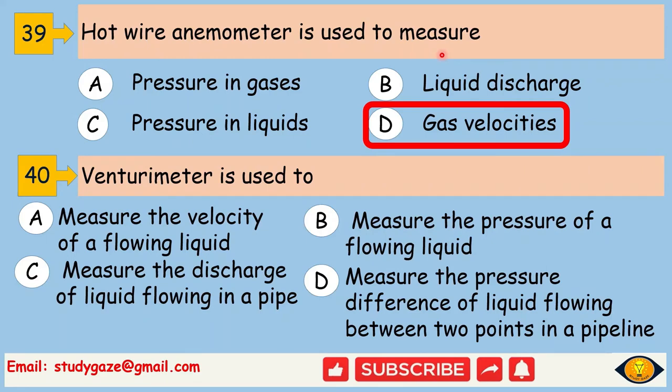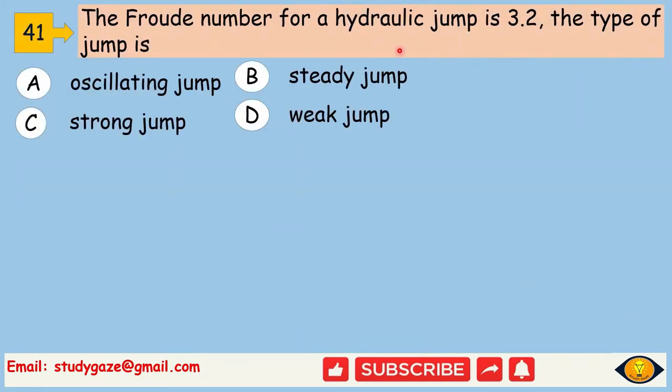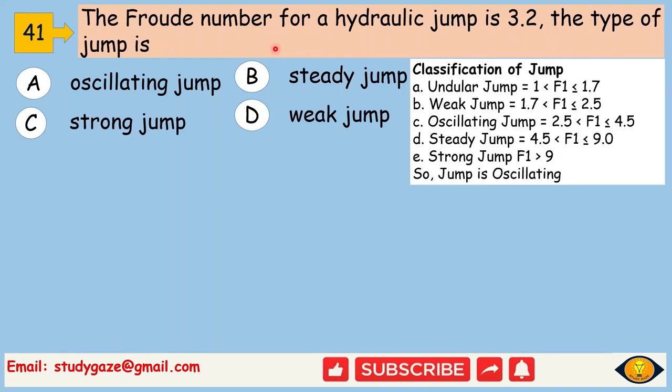Venturimeter is used to measure the discharge of liquid flowing in a pipe. The Froude number for a hydraulic jump is 3.2. The type of jump is oscillating jump. If Froude number varies between 2.5 to 4.5 then it is called oscillating jump.